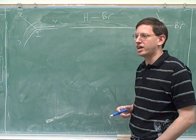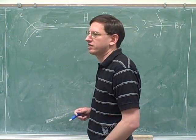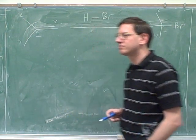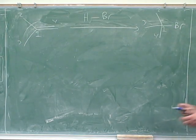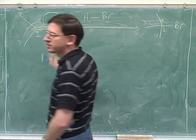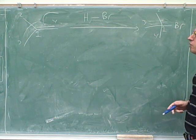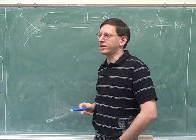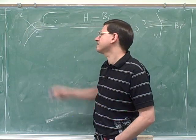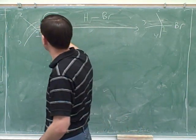You just kind of have to have that memorized, that carbon-carbon pi bonds are nucleophilic. Does that mean that they want to be at the head of an arrow or the tail of an arrow?